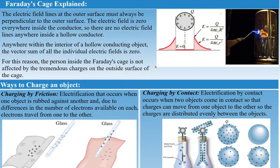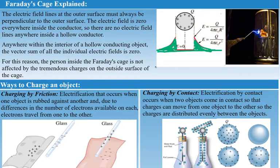The electric field inside of the cage stays zero. As shown in the graph, the electric field exists outside — the farther away you go, the less electric field there is. Closest to the surface it's strongest, then it drops to zero on both sides, and the electric field inside the conductor is zero.